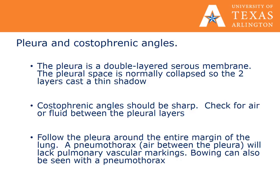The pleura is a double-layered serous membrane normally collapsed so the two layers cast a thin shadow. Costophrenic angles should be very sharp. Check for air or fluid between the pleural layers if they are not. Follow the pleura around the entire margin of the lung. A pneumothorax, or air between the pleura, will also lack pulmonary vascular markings.